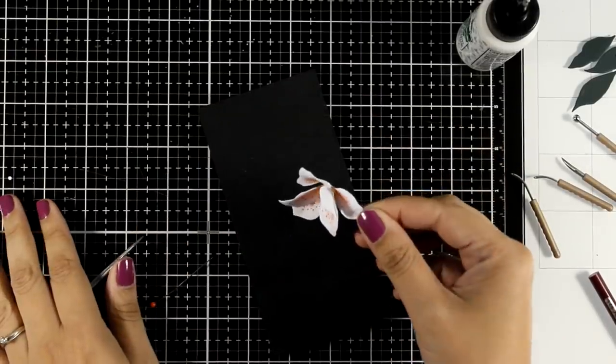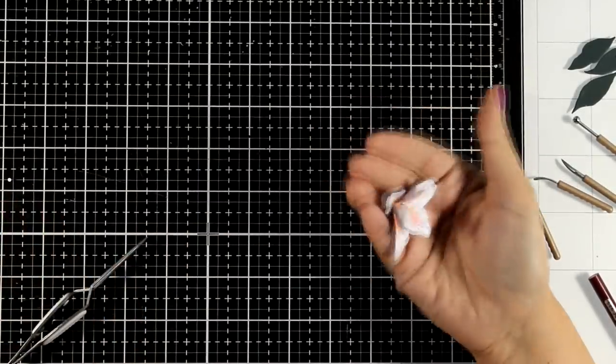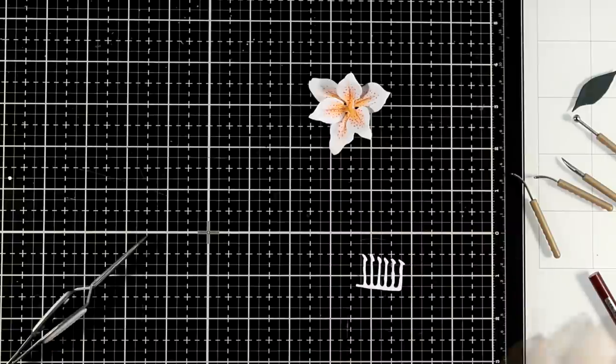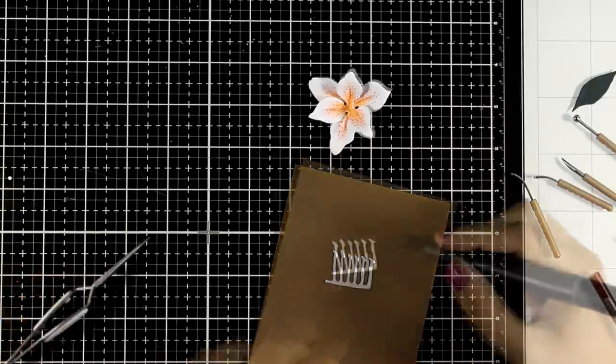And here is how it looks all finished. Just stick one inside the other. Just beautiful. Now I'm going to work on the stamen and I will show you how easy it is to put together. I'm just going to add some color.